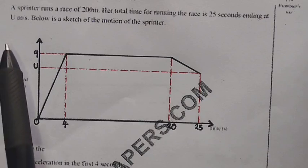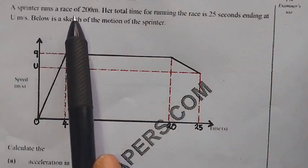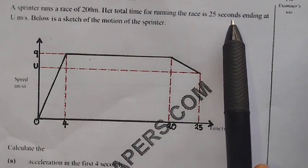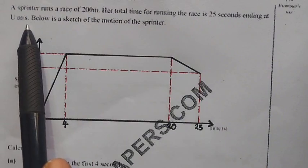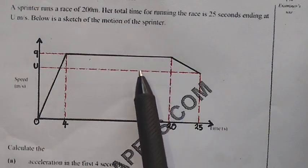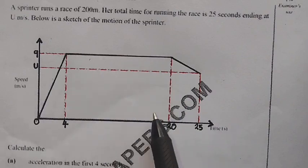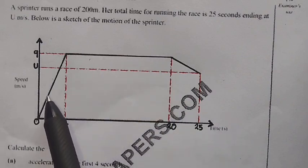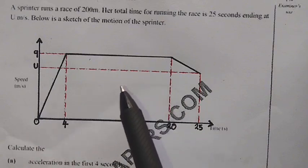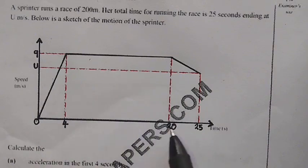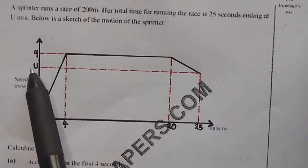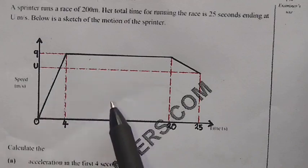The question reads: a sprinter runs a race of 200 meters. Her total time for running the race is 25 seconds, ending at u meters per second. Below is a sketch of the motion of the sprinter. This sprinter was running a race that was 200 meters, total time is 25 seconds, ending at u meters per second.